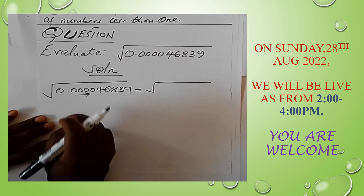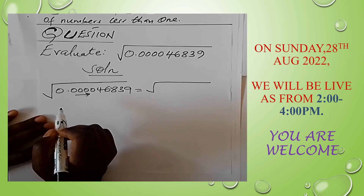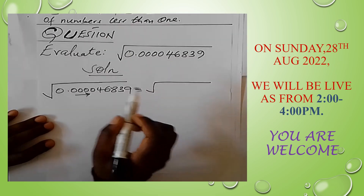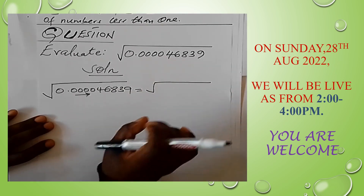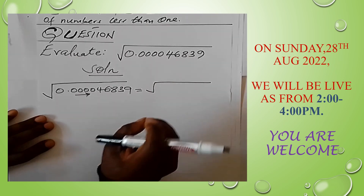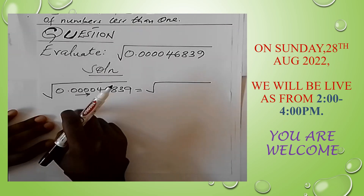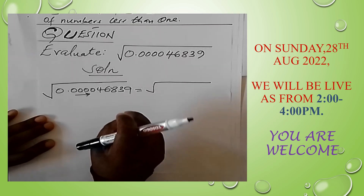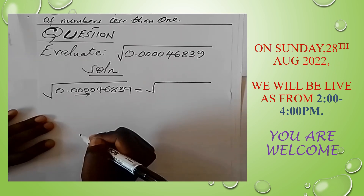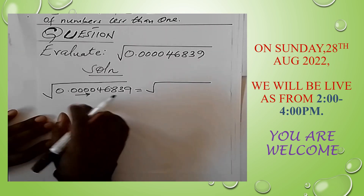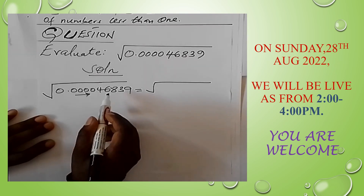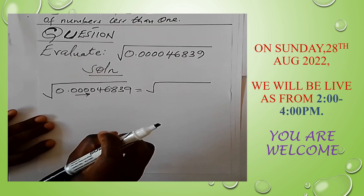Now, we are dealing with the square root, and the power must be divisible by 2. We have minus 5, and minus 5 divided by 2 gives minus 2.5 — a decimal number. To avoid that, we must make one more step to obtain a power that is divisible by 2. So 5 is not divisible by 2, which means 4.6839 times 10 to the power minus 5 is not the right standard form for this question.